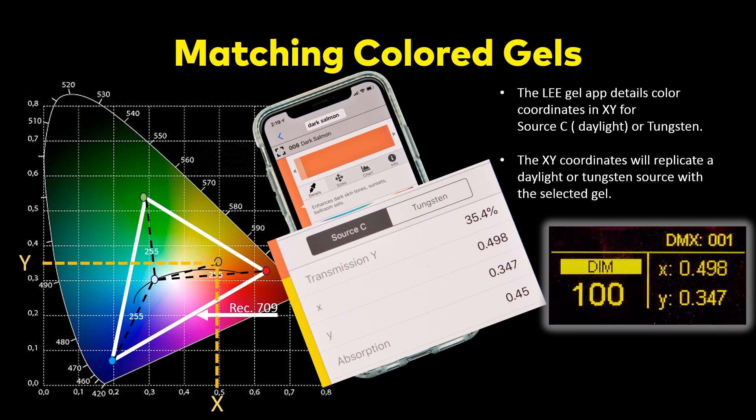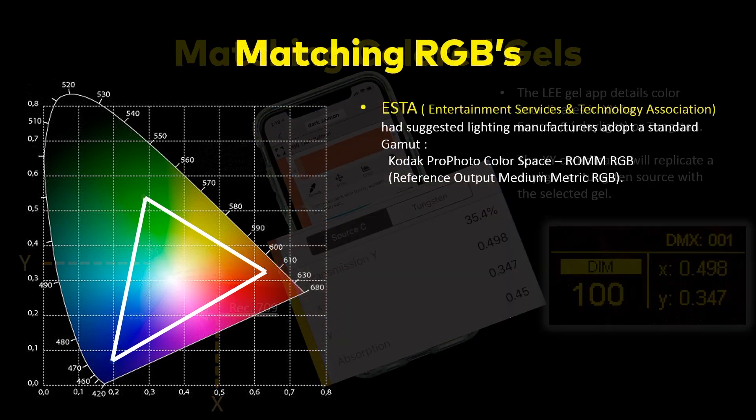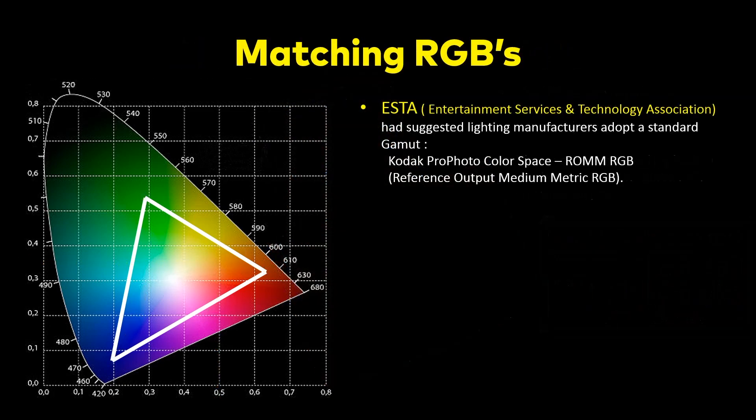So that's a display of what ours looks like — very straightforward and simple. You simply put in the data that the field outputs. ESTA — the Entertainment Services and Technology Association, also known as PLASA in the UK — they're suggesting that we as manufacturers adopt the Kodak Profoto color space system.